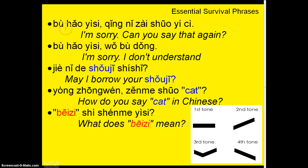So there's the fourth tone — 'bù.' It's not super authoritative or domineering, just a quick bù going down. To say 'I'm sorry, can you say that again?' in Chinese: bù hǎo yìsi, qǐng nǐ zài shuō yī cì. Note: the C in Chinese is pronounced like the 'ts' in 'cats.' So that's cì, not 'see.' Bù hǎo yìsi, qǐng nǐ zài shuō yī cì — I'm sorry, can you say that again?